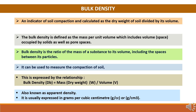Bulk density can be used to measure the compaction of soil and is expressed as: mass or dry weight divided by volume. Bulk density is also known as apparent density and is usually expressed in grams per cubic centimeter.